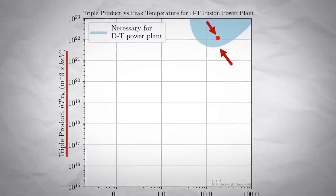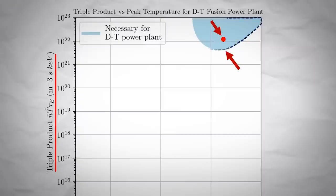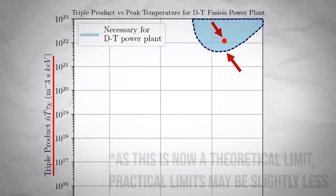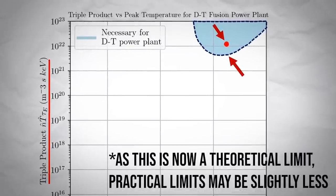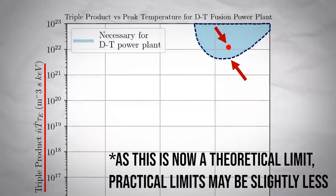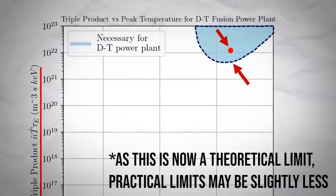This is a huge breakthrough, as anything within the blue shaded area is supposedly viable for a power plant using deuterium and tritium as fuel. This means ITER would be further into this area, and shows commercial power from fusion is becoming ever closer to a reality.